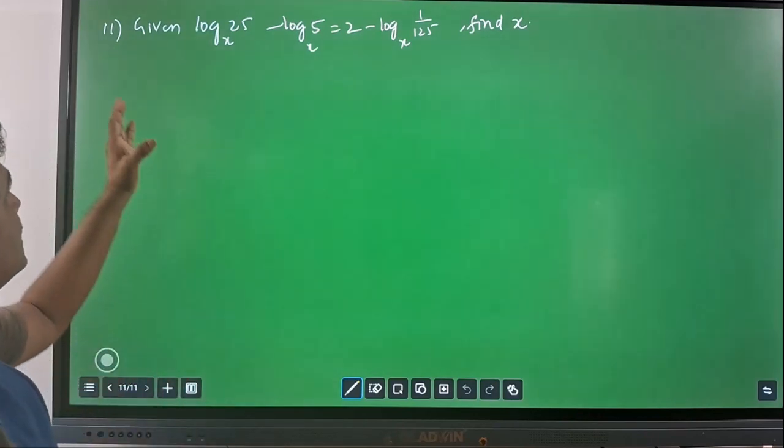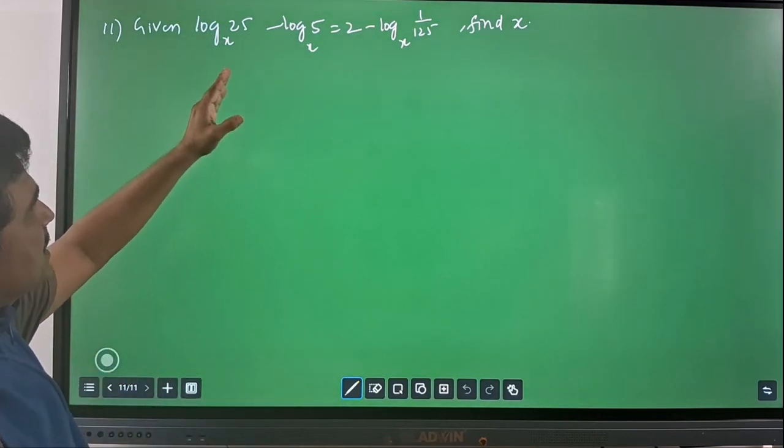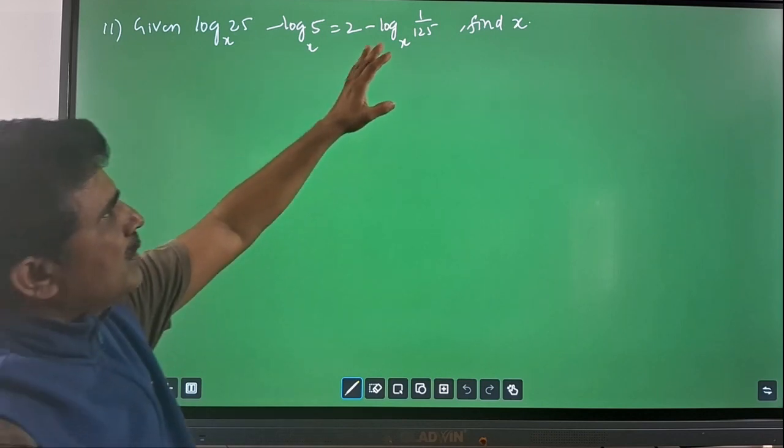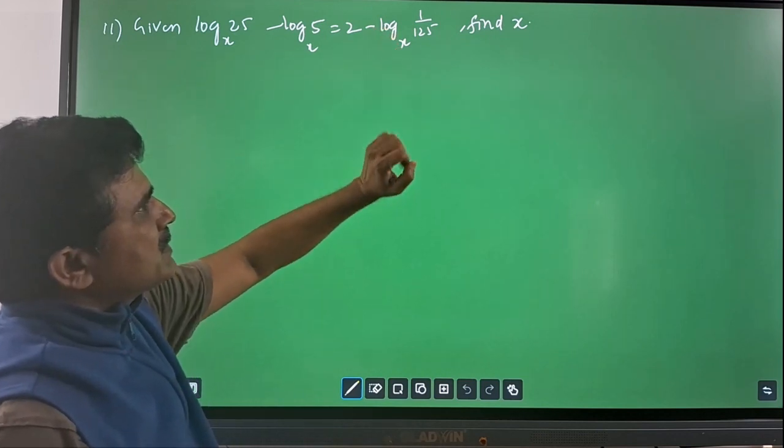Our next question is: given log 25 with base x minus log 5 with base x is equal to 2 minus log 1 by 125 with base x, find x.